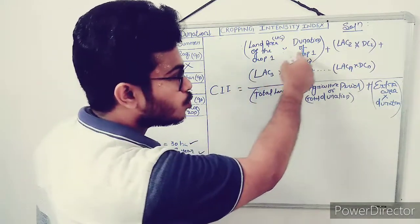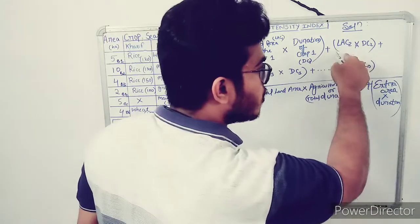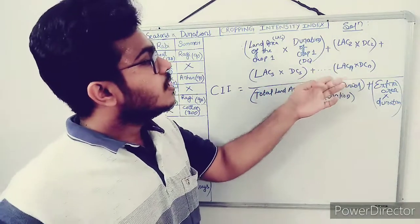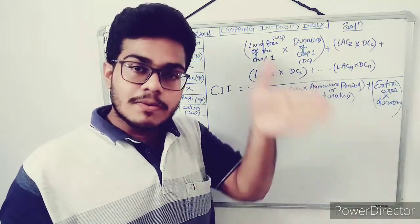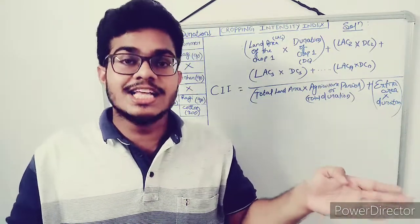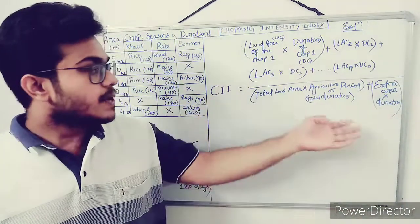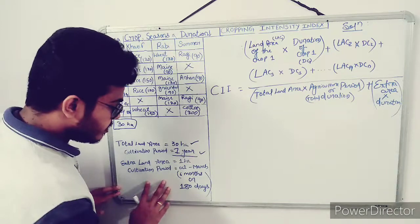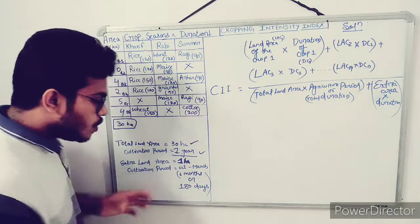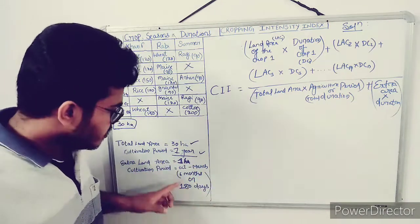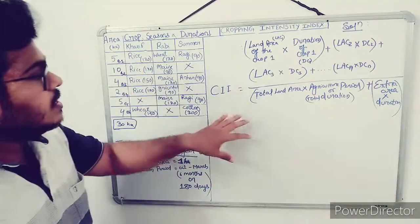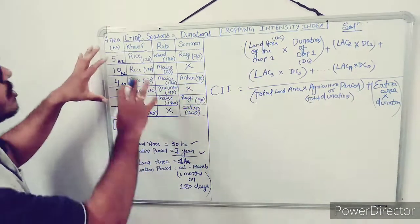So the numerator sums up: land area of each crop multiplied by its duration, for all crops 1 through 5. The denominator is the total area (30 hectares) multiplied by the total number of days the cultivation has been done — one year, two years, or three years. Plus, if the farmer has an extra area of 1 hectare cultivated for around 180 days, you can add that as extra area × duration to the denominator as an exception.